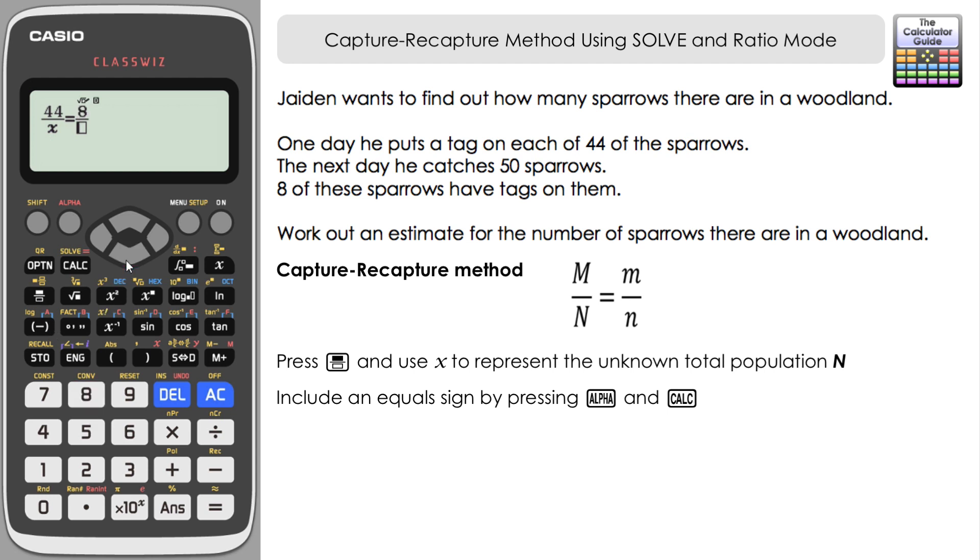Then we want the fraction button again, and we want to set up our recapture information. So little m is how many of the sparrows were tagged on our recapture—that was 8. And then on the bottom, it was how many sparrows we caught in the recapture—it was 50 sparrows altogether. So 8 out of 50. Essentially what we're doing here is resolving an equivalent fraction and finding out what that is. There's several different ways you can do that, but it just makes it easier to set it up as it is so we understand what's going on.